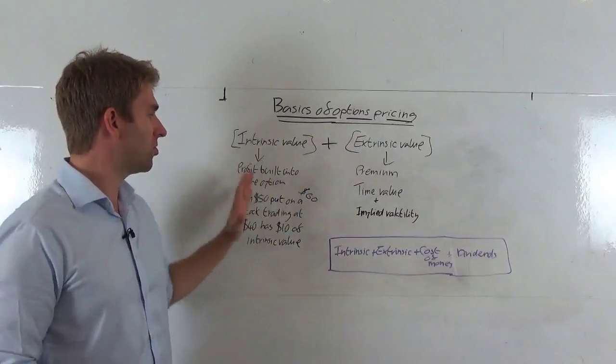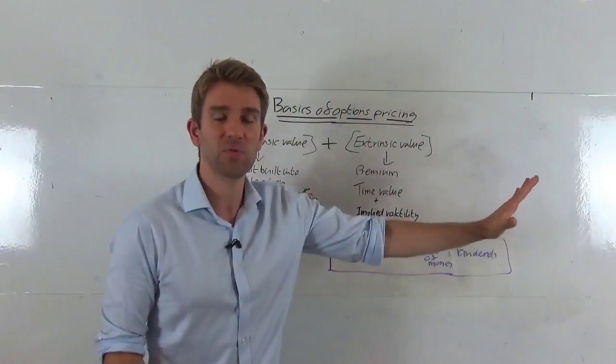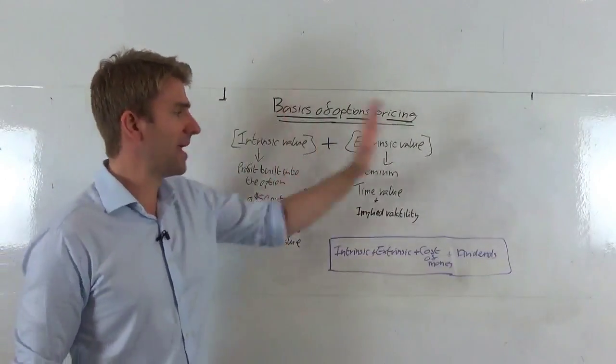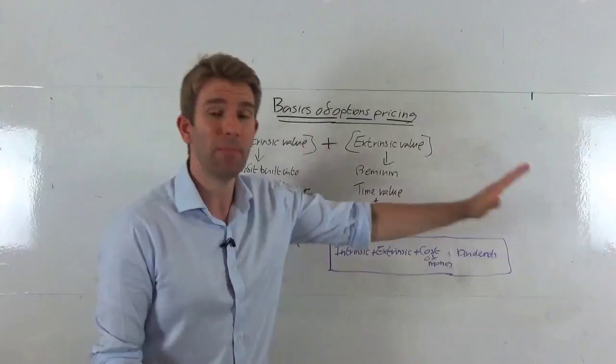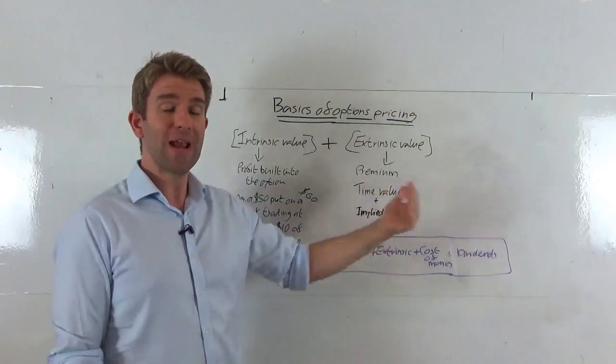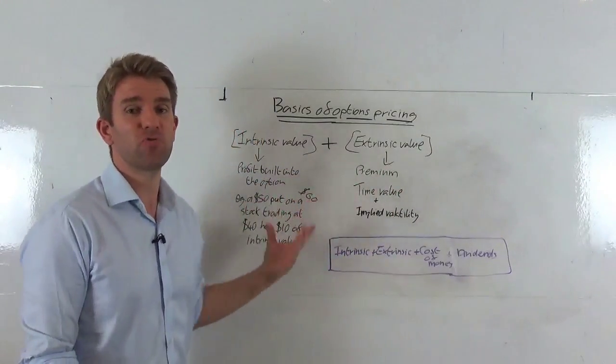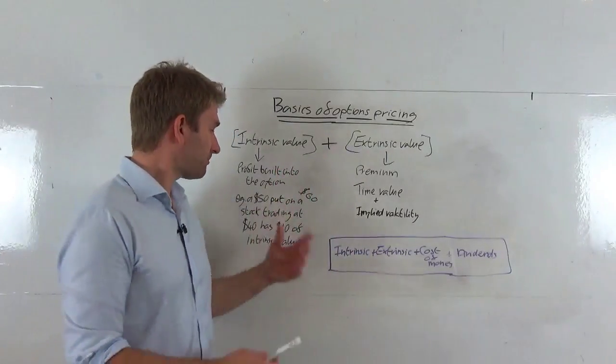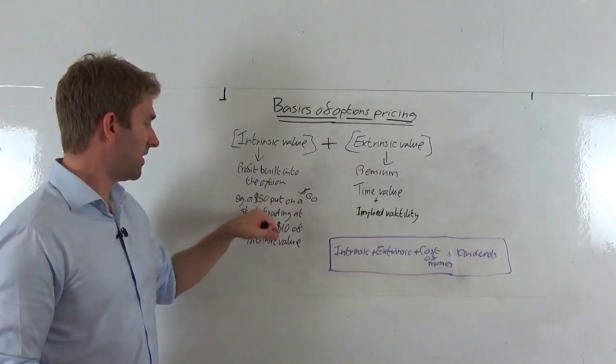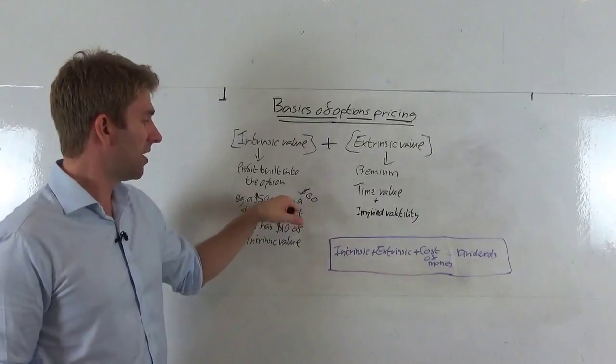Intrinsic value works for puts and calls. You can see how if the stock price was way higher than the call option—in other words, the call option was what was called in the money—or the stock price is way lower than the put option in the money, there's some intrinsic value. Very often, if we buy an option—let's say we bought a 50 put option and the price was 60—there's no intrinsic value there.